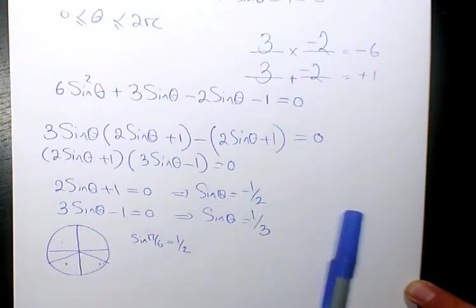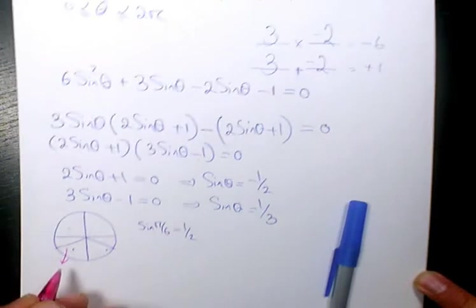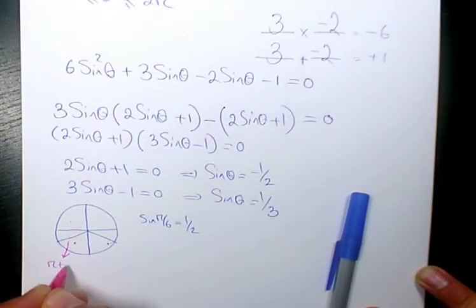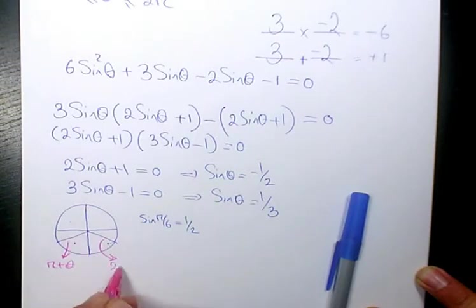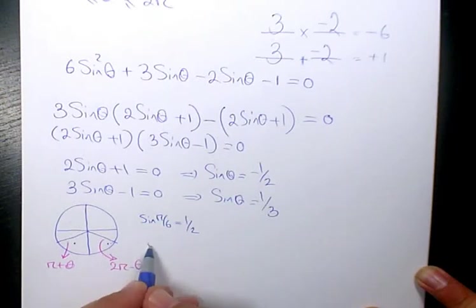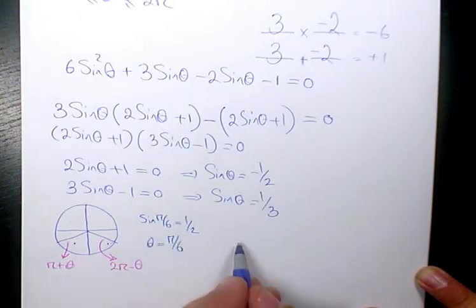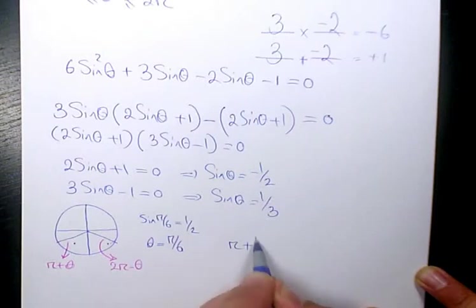Sine pi over 6 is 1 over 2, but here we have negative 1 over 2. When we're talking about quadrant 3, it's going to be pi plus theta. And whenever we have a number in quadrant 4, we need to rearrange it in terms of 2 pi minus theta. Theta in this case is pi over 6, so one answer is pi plus pi over 6, and one answer is 2 pi minus pi over 6.